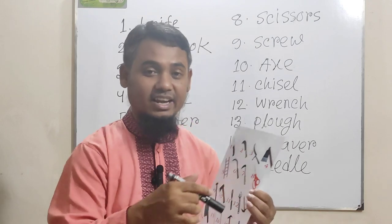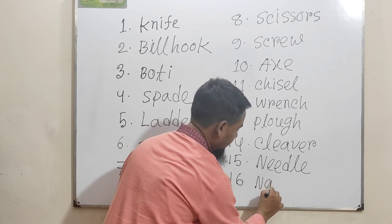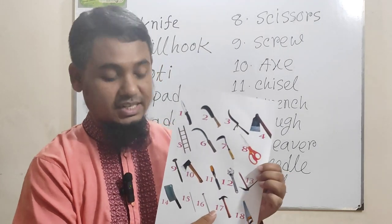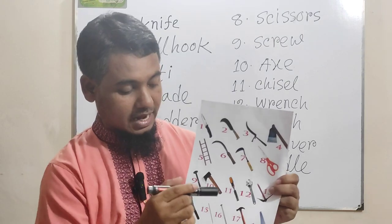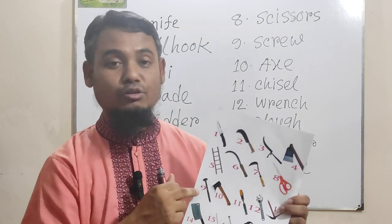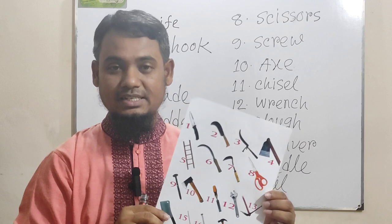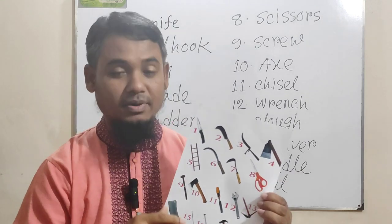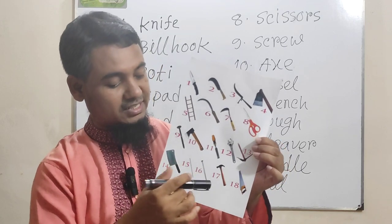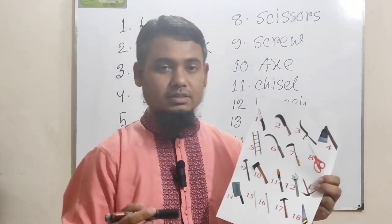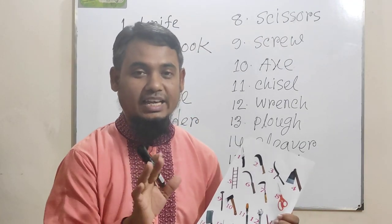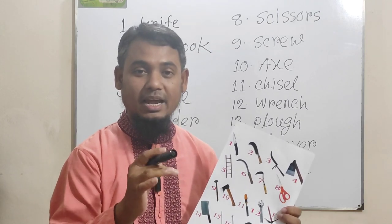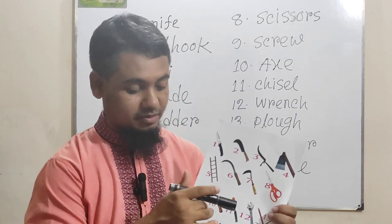Picture number seventeen is hammer. Hammer is used to strike on the top of a nail or screw to attach it. It is used by the carpenter and in some cases by the mason — meaning it is used by both carpenter and mason. The spelling of hammer is H-A-M-M-E-R.